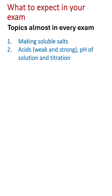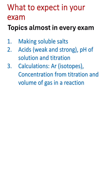There will always be something about titration, and when we talk about titration we have to talk about calculation. Calculating concentration from titration is almost a definite question in your exam — make sure you know how to use the equations for this. Also, there is always a question about calculating the relative atomic mass from different isotopes, and they usually also ask you to define what is meant by isotopes. Additionally, there is always a question about calculating the volume of a gas in a reaction, so pay attention to that calculation as well.